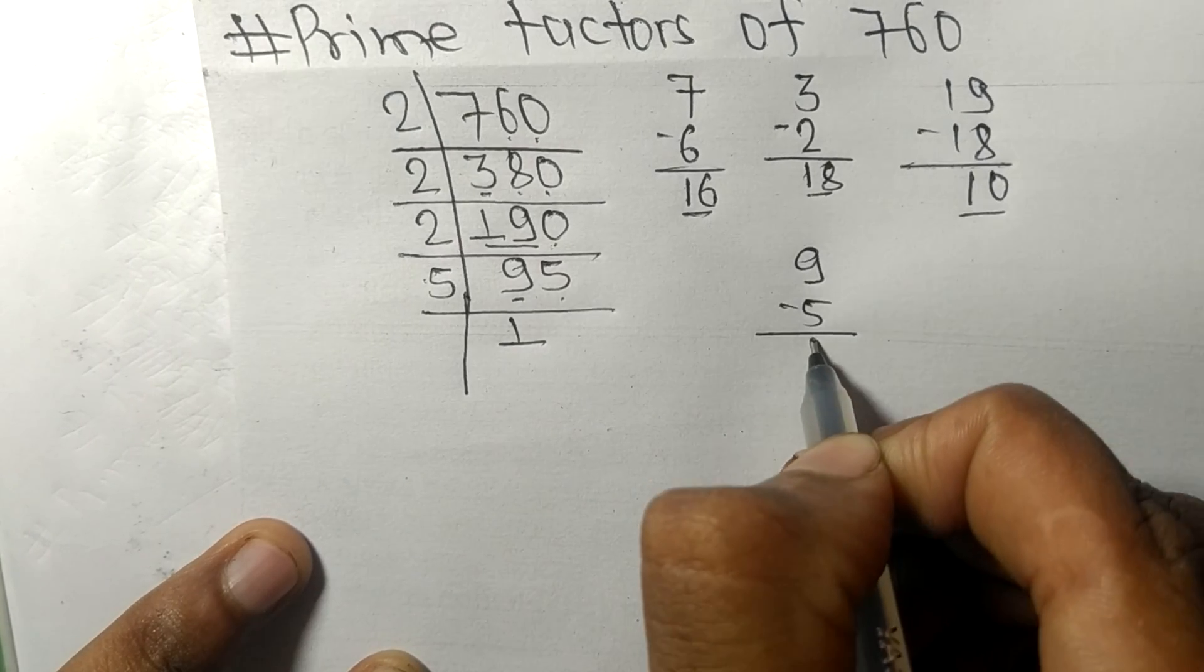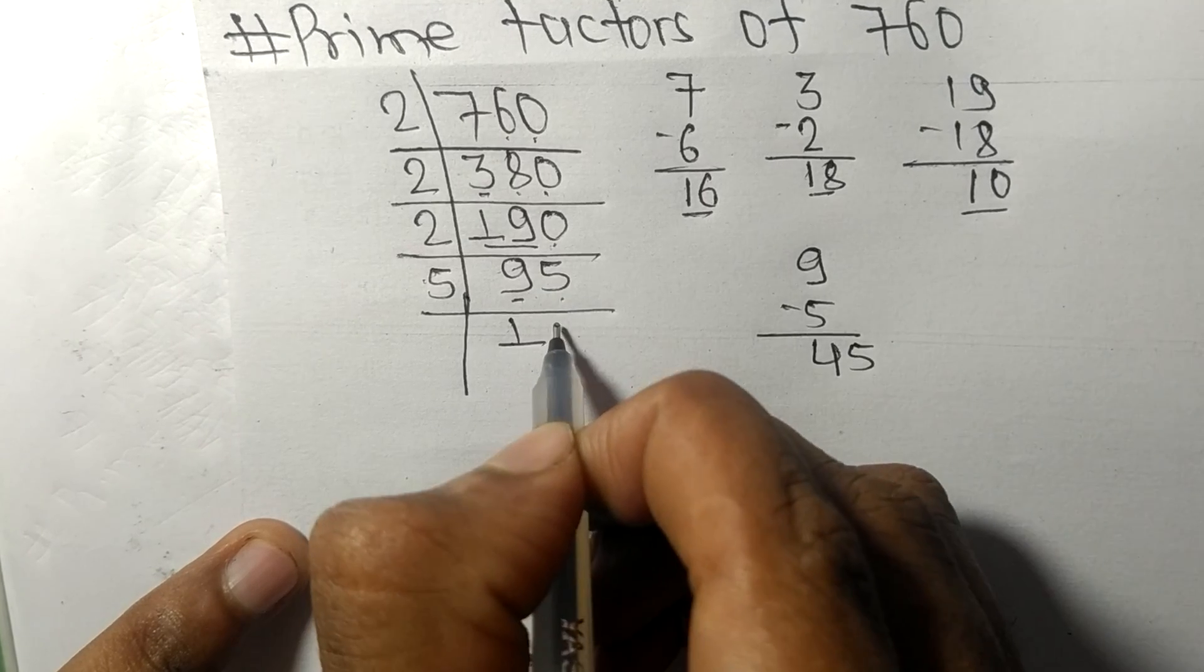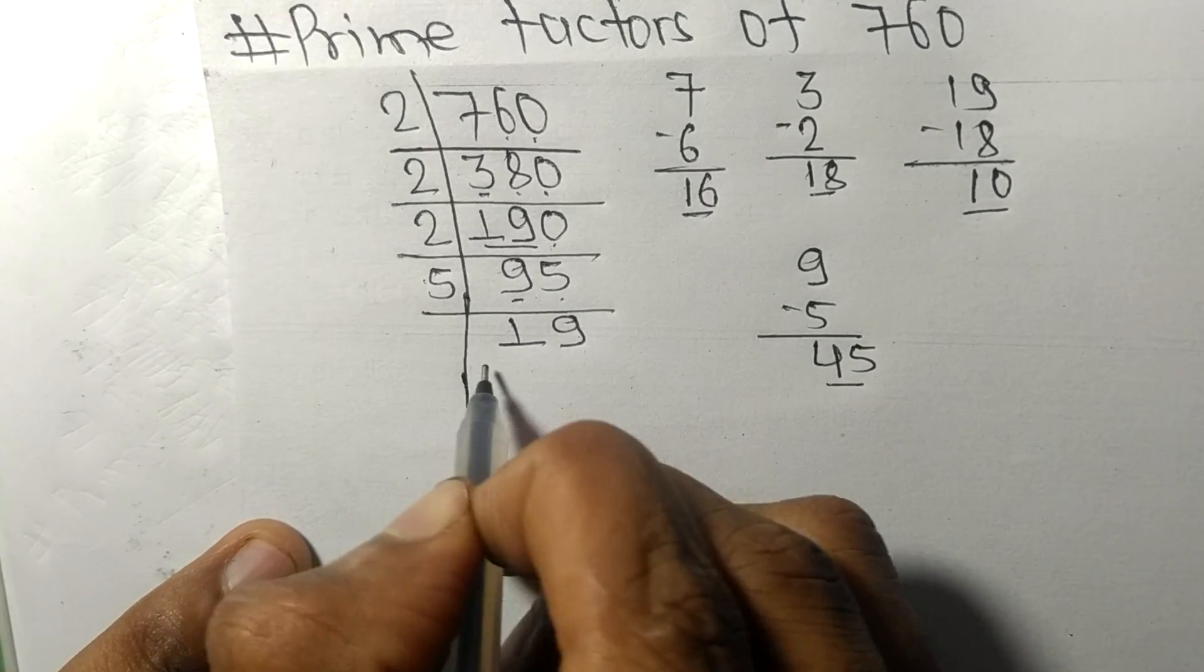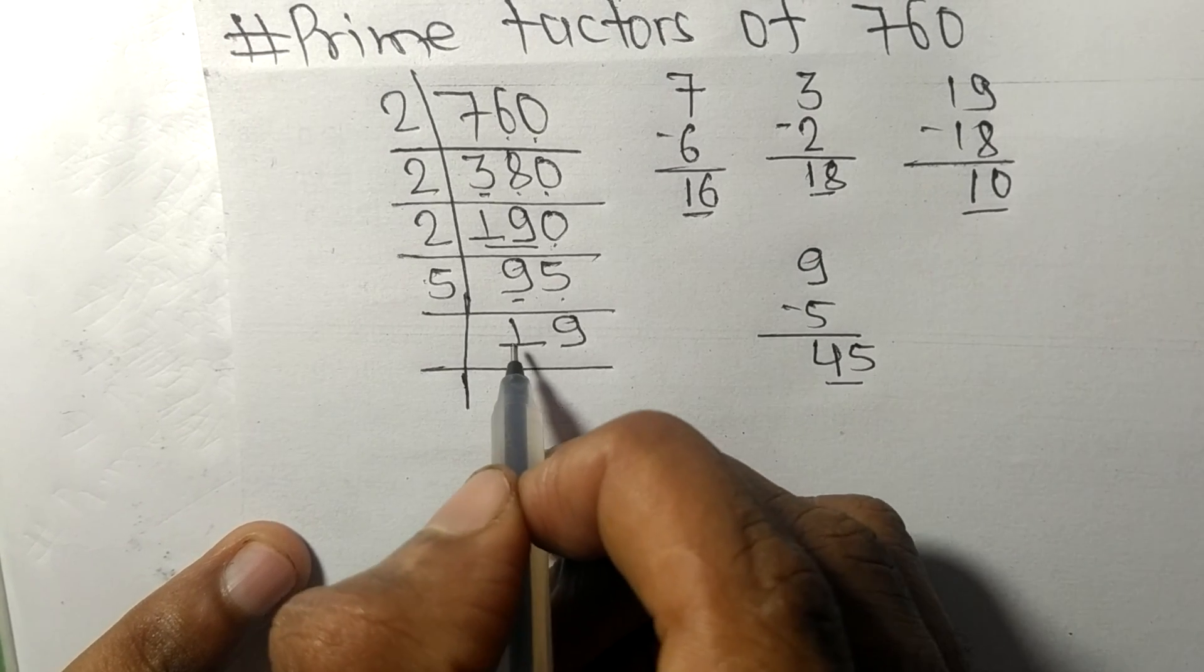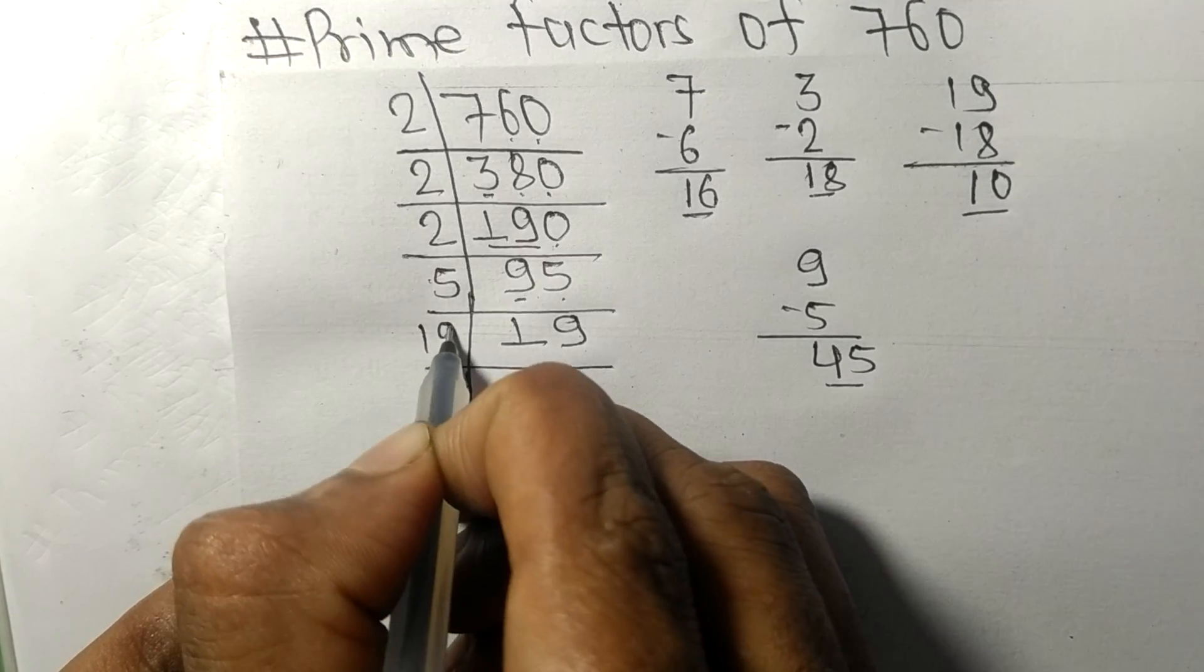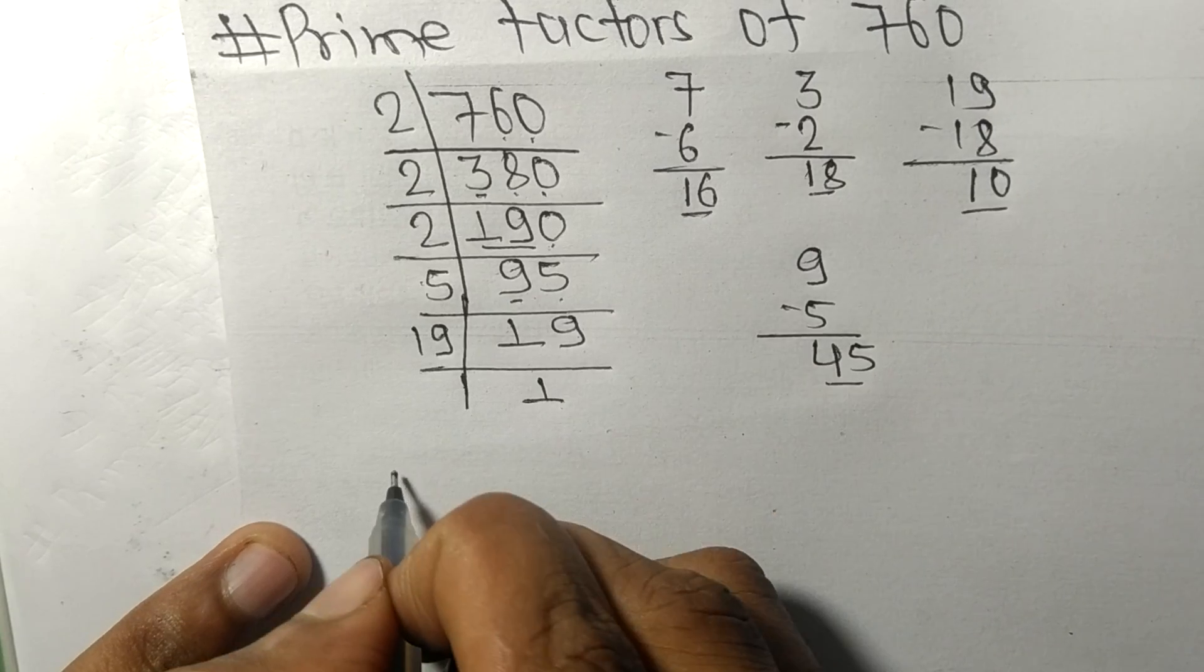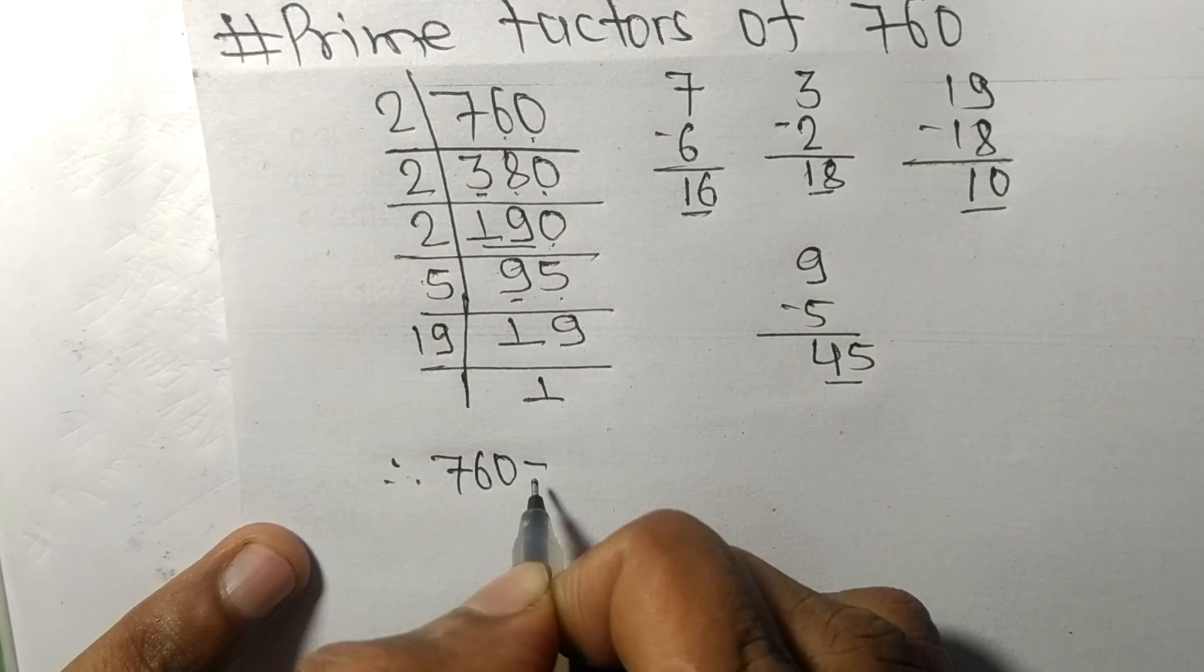And this 5, 45, so 5 times 9 means 45. Now we got 19, which is a prime number, so it is exactly divisible by 19 only, and on dividing we get 1.